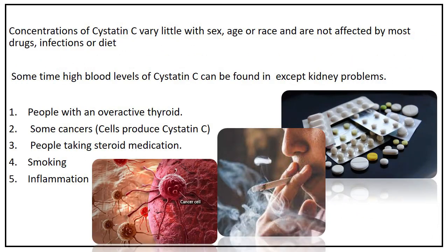Concentrations of Cystatin C vary little with sex, age, or race and are not affected by most drugs, infections, or diet. Rarely, high blood concentrations of Cystatin C are the result of increased production by cells rather than a kidney problem — for example, in people with an overactive thyroid, with some cancers, or in people taking steroid medication, smoking, and inflammation.